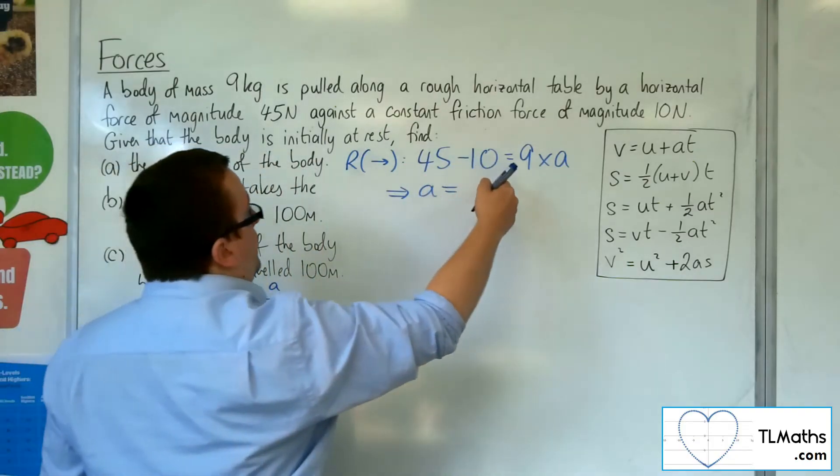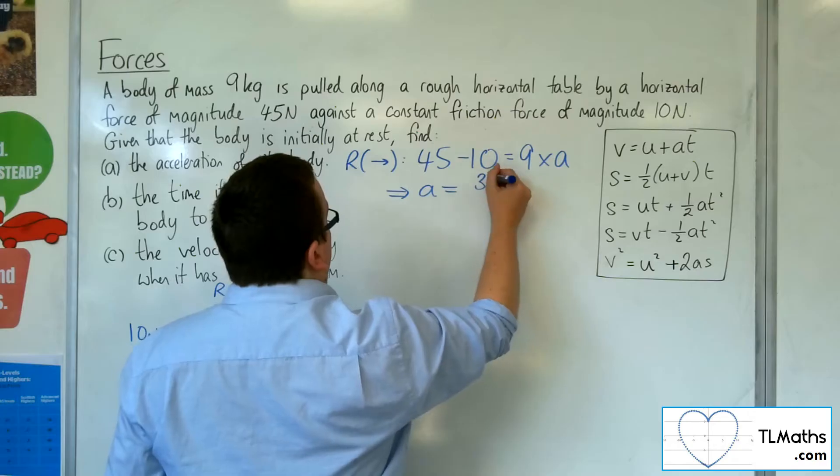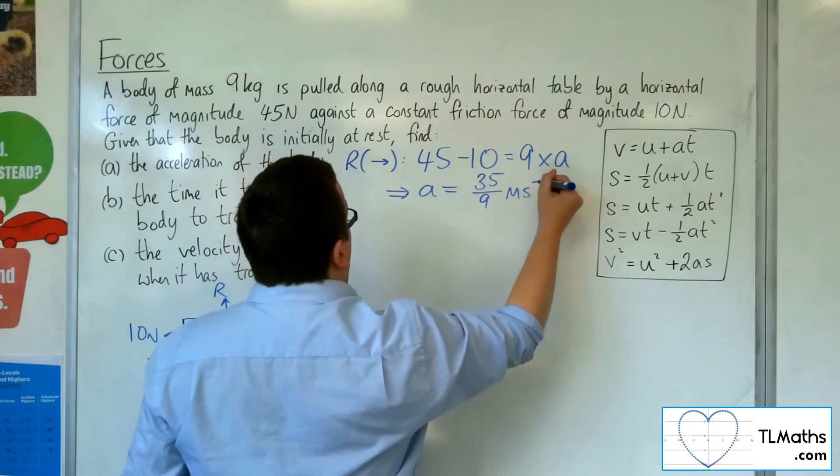So 45 take away 10 is 35, 35 divided by 9. So it's 35 ninths metres per second per second.